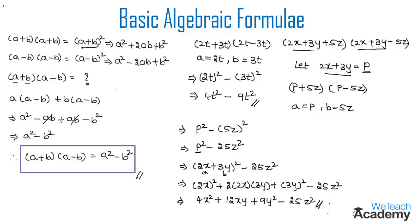Make a note that the formula (a + b)(a − b) = a squared minus b squared is a very important formula used to solve many examples in mathematics. Hope you understood the presentation. Refer to more videos on the derivation of basic algebraic formulae on our website vteachacademy.com. Till then, take care and bye.